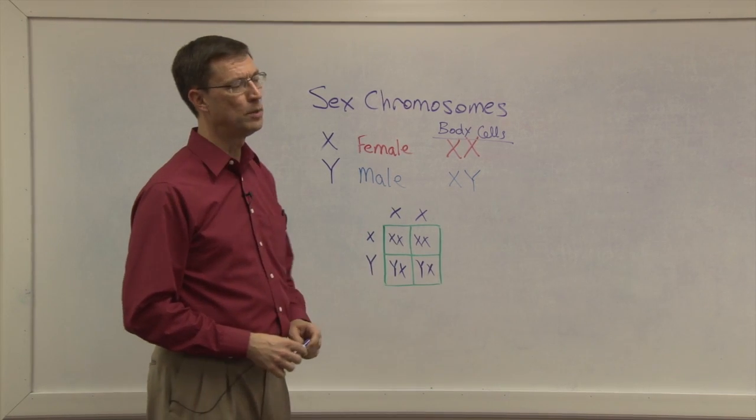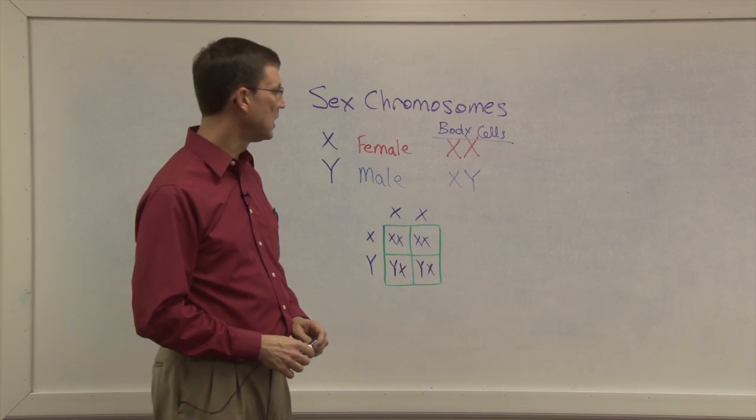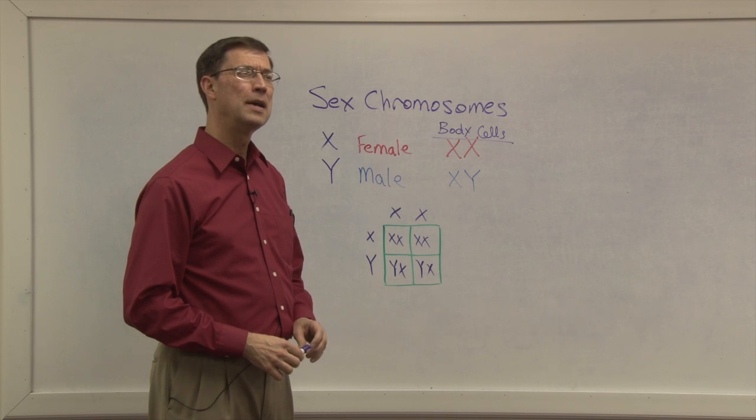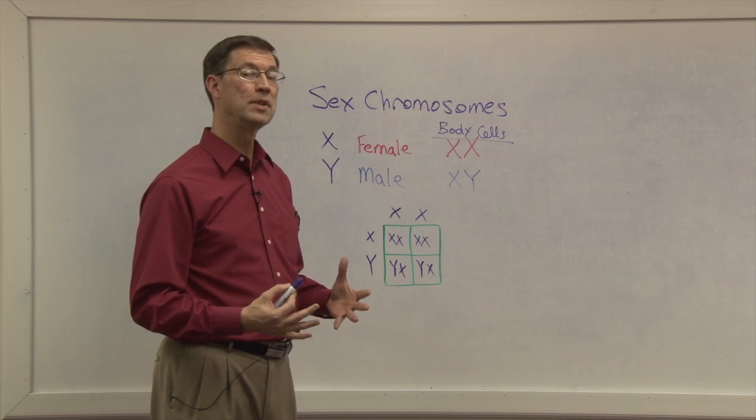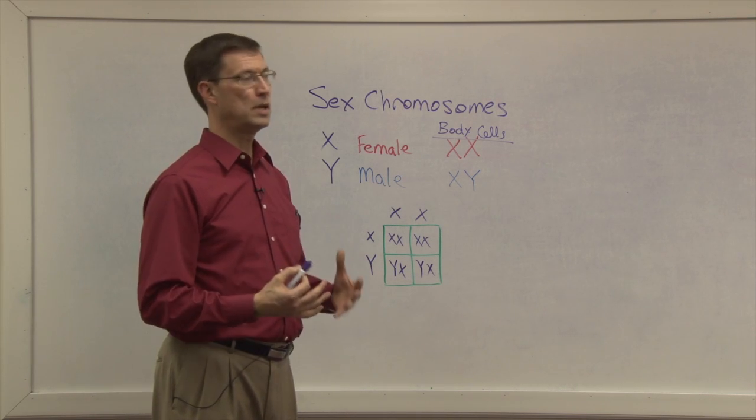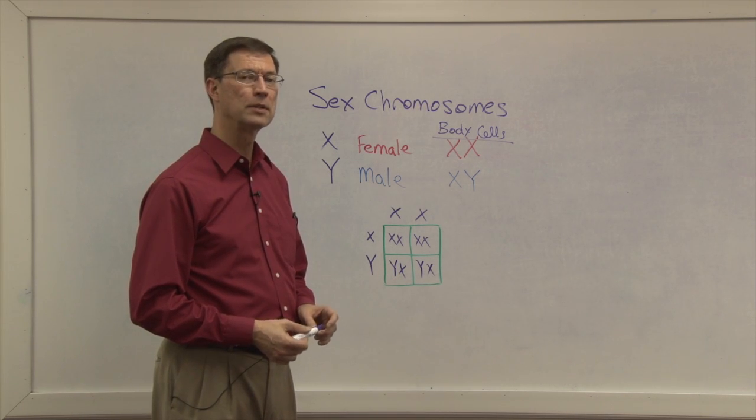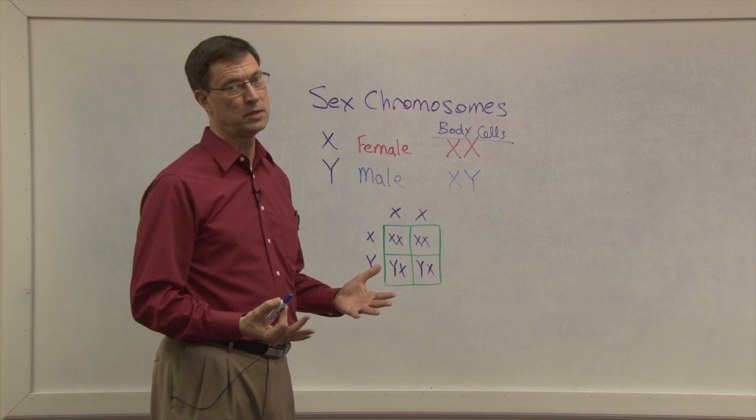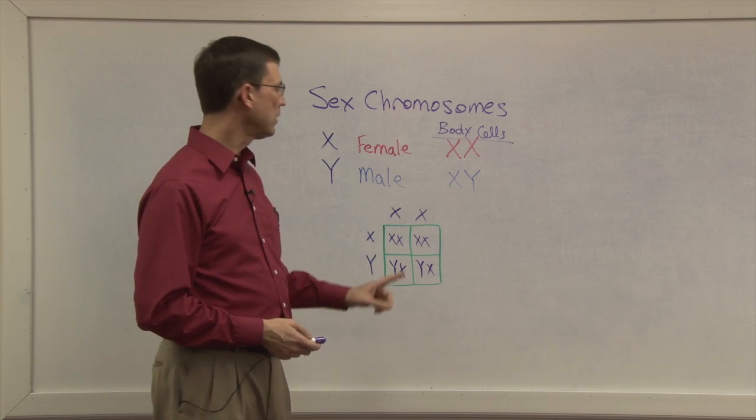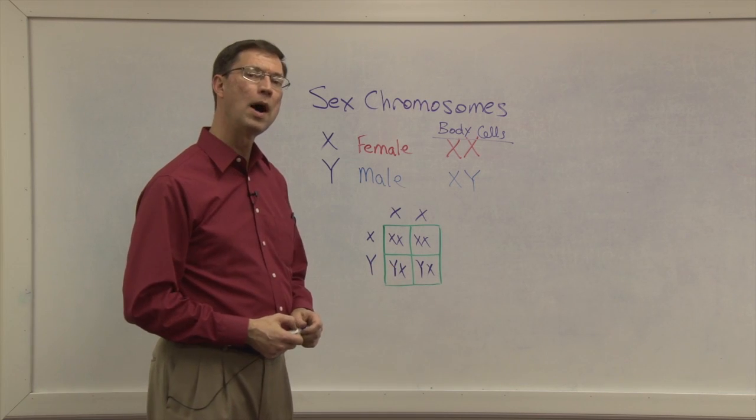Now, one last thing about this, and your PACE will talk more at length about this, but there are certain diseases, genetic problems, that are only carried on the Y chromosome. They're called sex-linked genetics. Things like colorblindness, for instance, only travel on the Y chromosome.